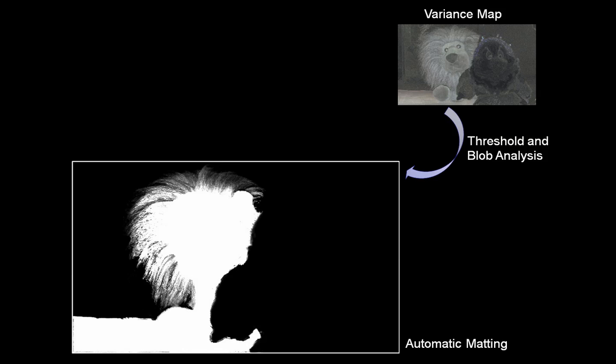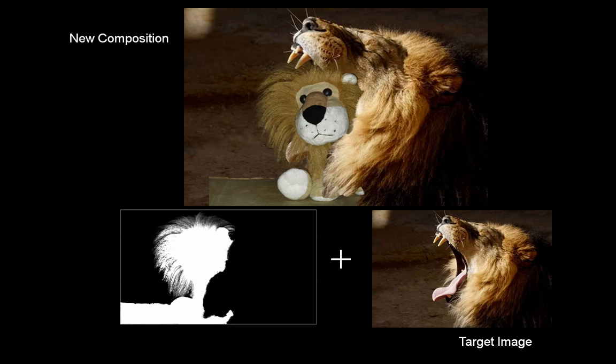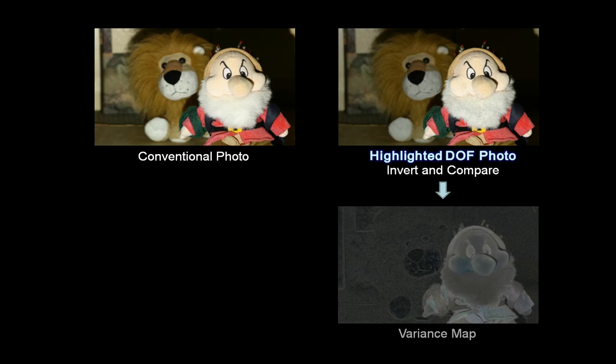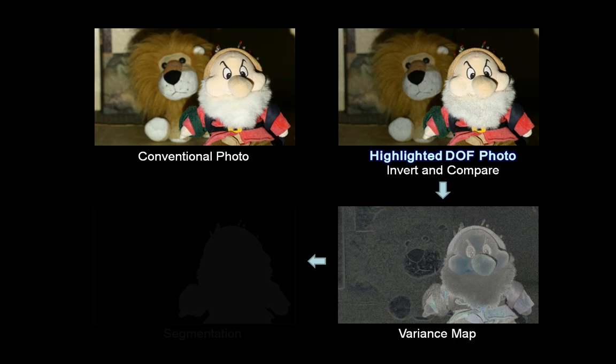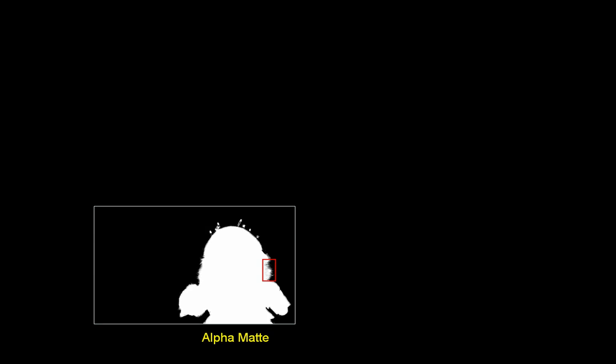The high quality segmentation result can be used for automatic natural scene matting. This is the new composition result when using an automatically generated alpha matte image. Here is another comparison when the foreground doll is focused — a high quality alpha channel image for matting is acquired by the invert and compare method.